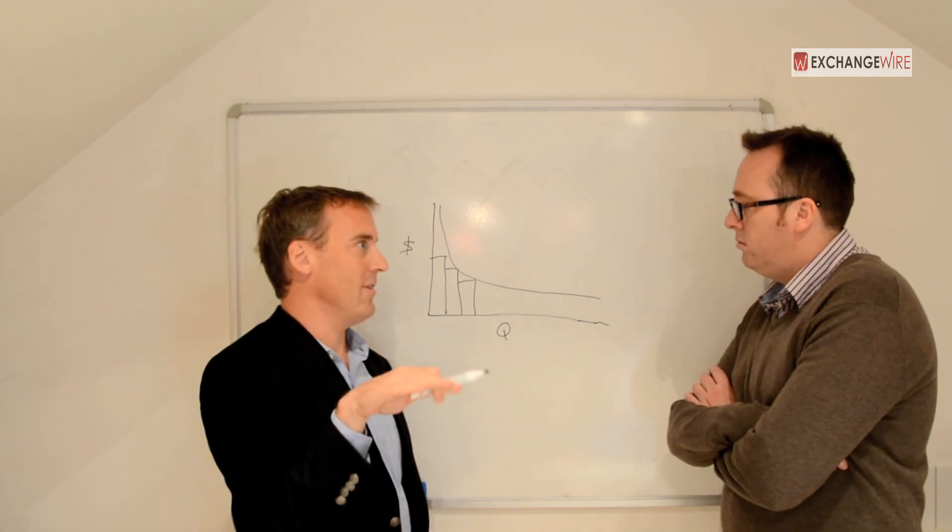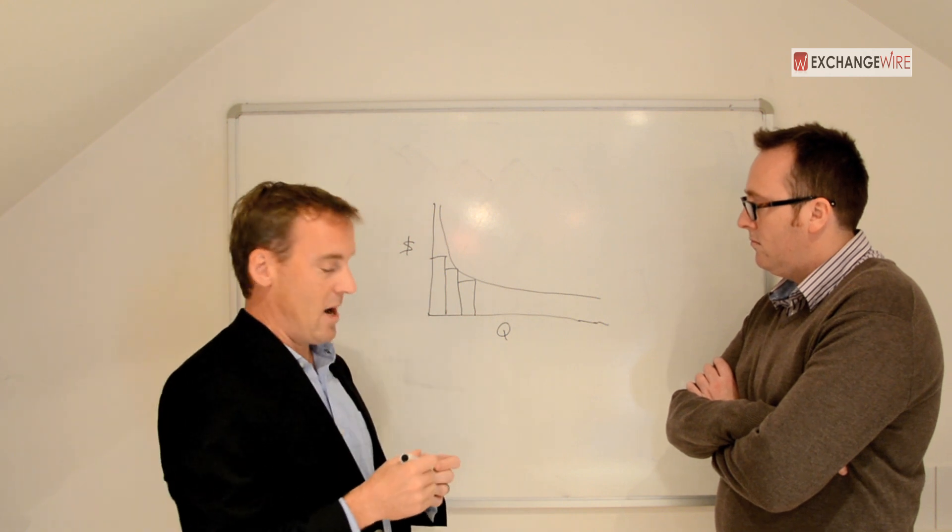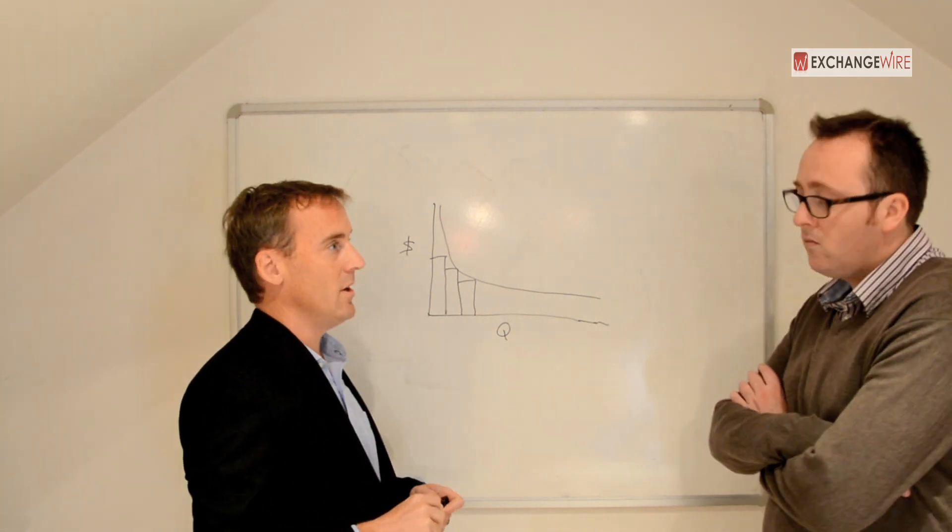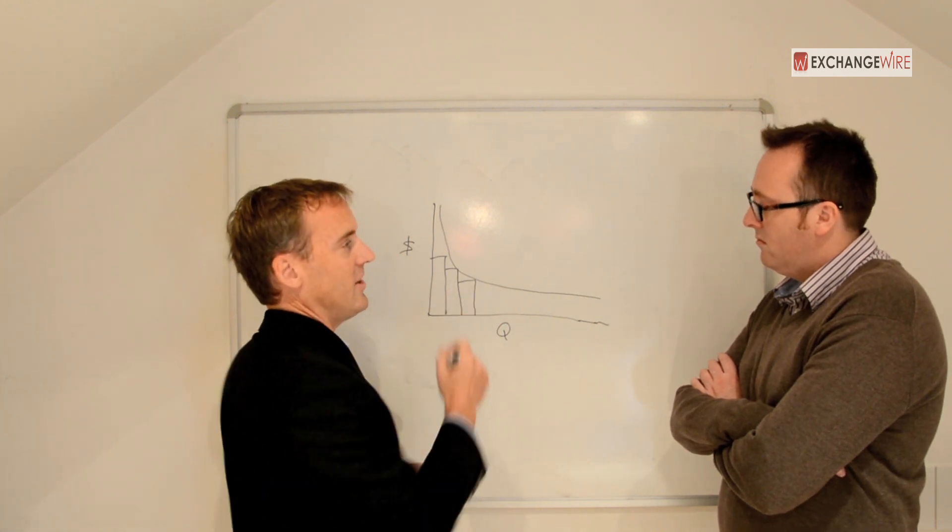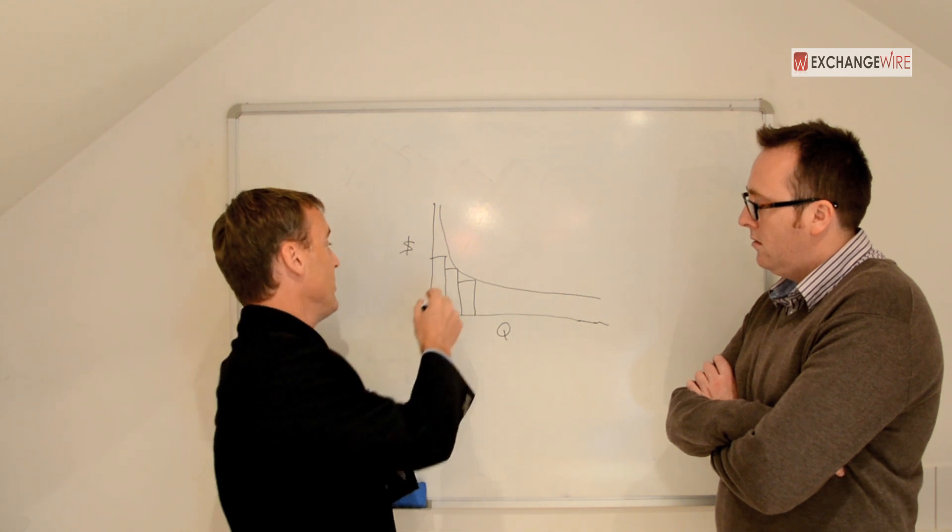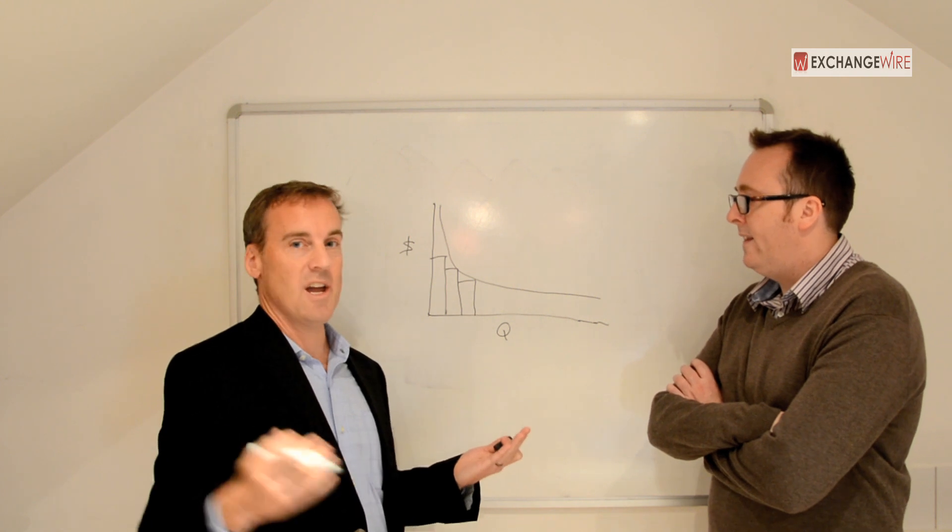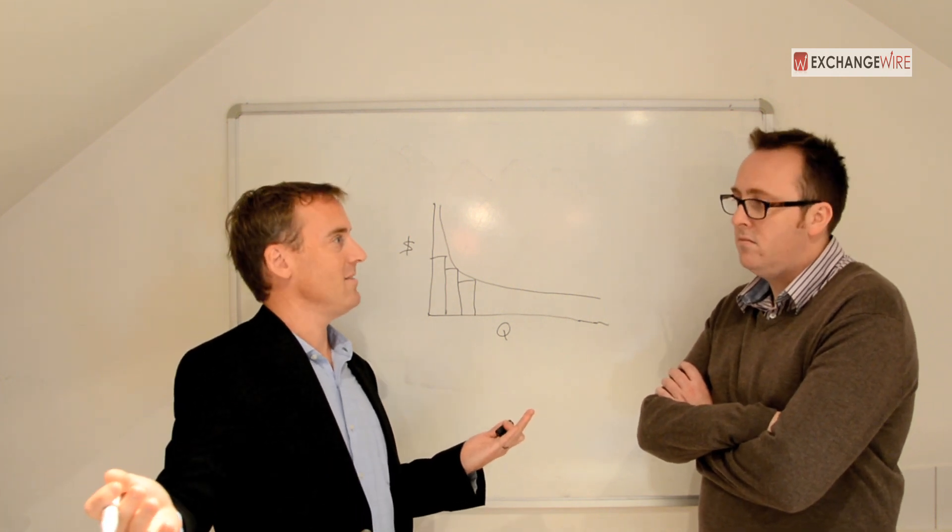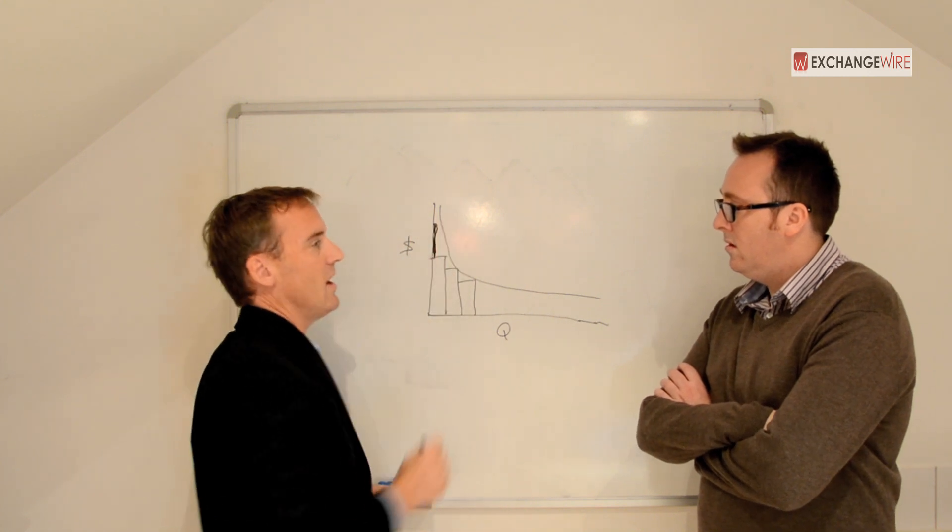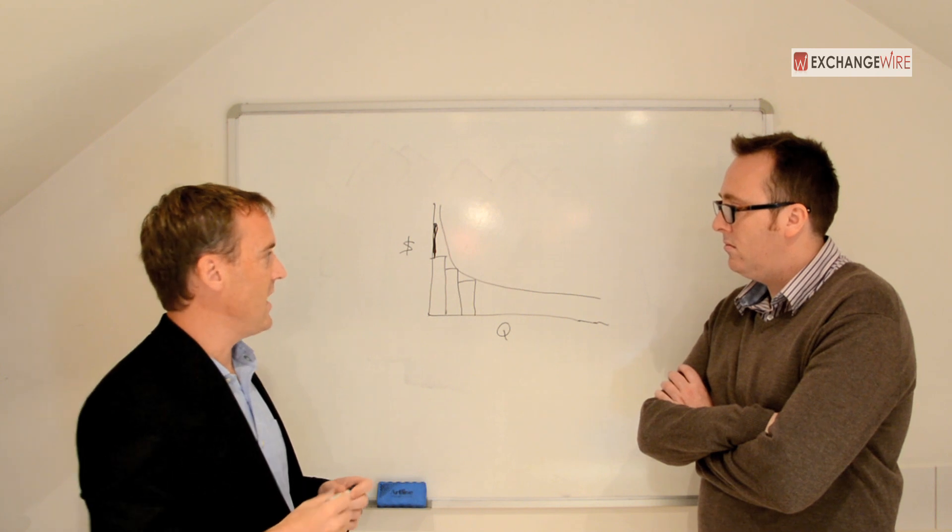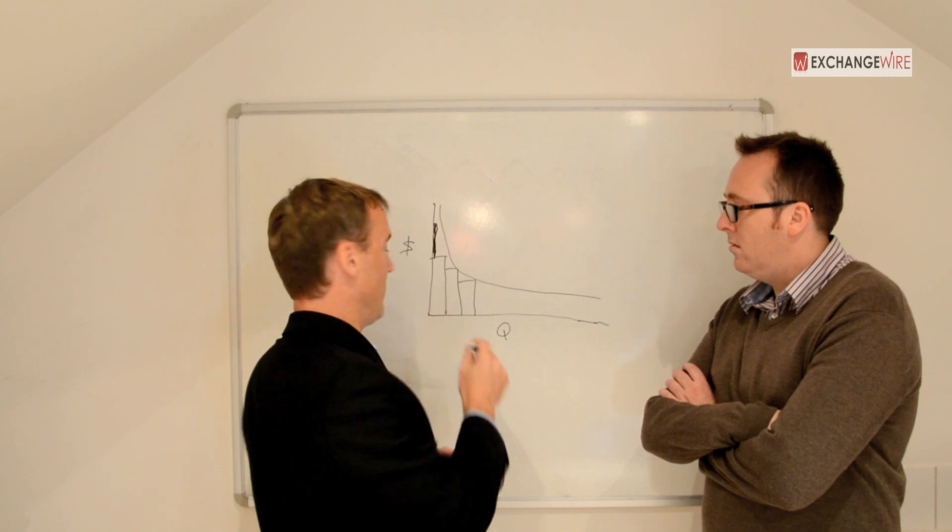So the ad server has line items with different values. And it could be, say, a 15-pound CPM. Now, a conventional approach in the market is to reach out to the indirect channel, RTB, and to say, I've arrived in the decision that I'm going to serve this 15-pound campaign in order to meet my pacing requirements. Can RTB beat that? And if it's more, then yes, you'll award that. What that doesn't take into consideration is maximizing all of this under the curve.